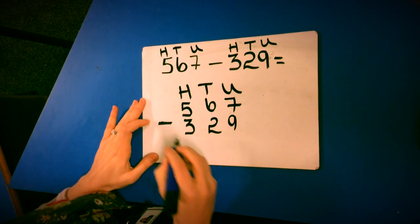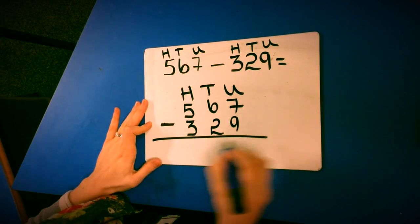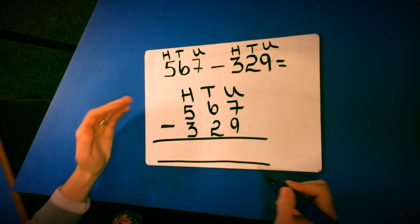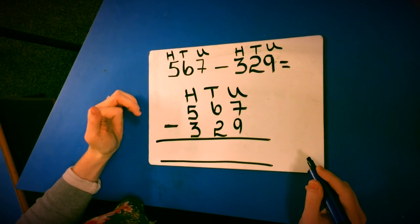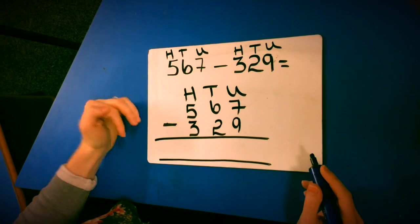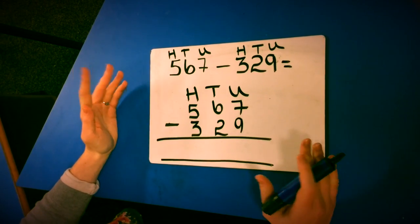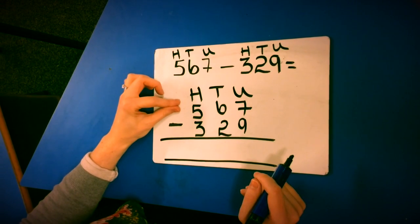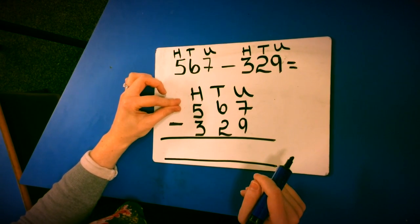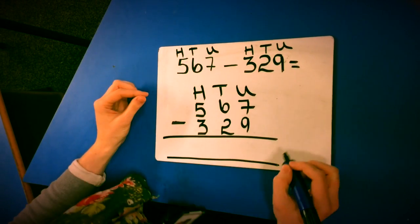I'm going to put my operation sign, so subtract. And unlike addition, we explain to the children that subtraction is not commutative, so it's the opposite. We can't put the numbers either way. The biggest number always has to go on top. That's a really important skill for what they need to remember.